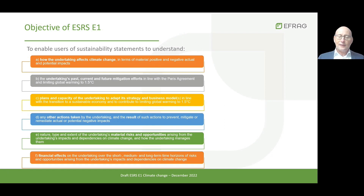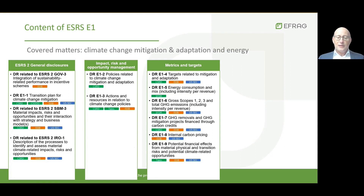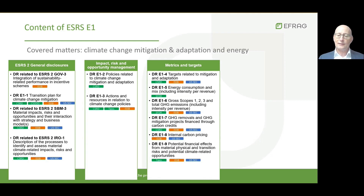Under the climate change standard, undertakings shall disclose how they intend to transition towards a sustainable low-carbon economy, which basically means reducing their greenhouse gas emissions and adapting their strategy and business models to become more resilient to climate change risks. E1 covers climate change mitigation and adaptation and the energy topic. Undertakings are required to disclose whether and how they have defined a transition plan, including a greenhouse gas emission reduction target compatible with a 1.5 degree scenario.